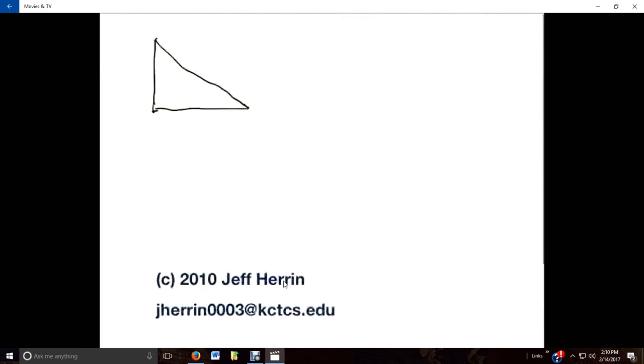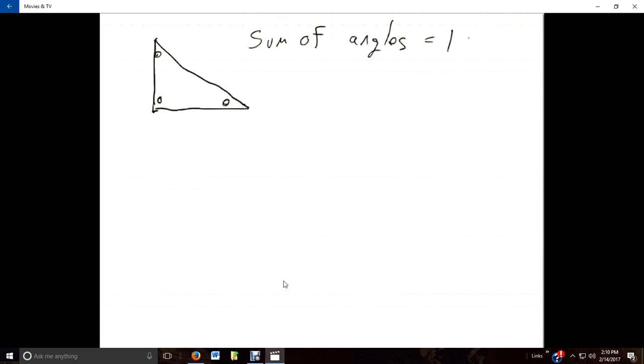So let's first look at a triangle. One thing we know about triangles is that when you add the measures of the three angles together, the sum of the angles is 180 degrees.